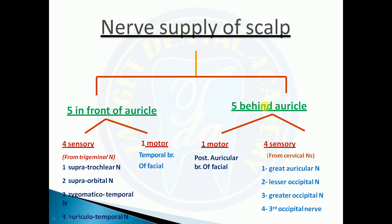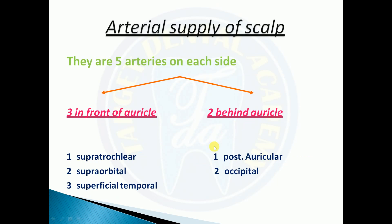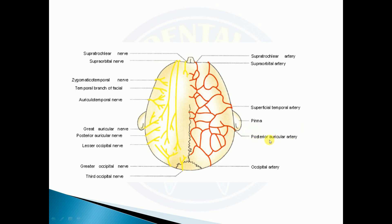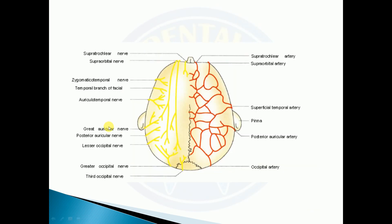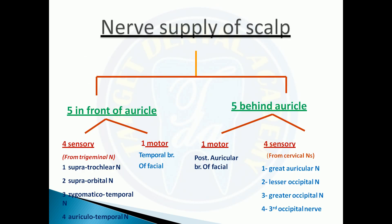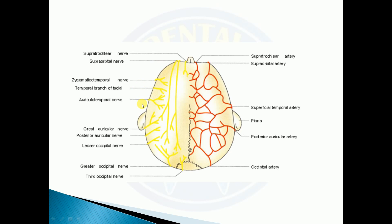Behind the auricle, one nerve is motor: the posterior auricular branch of the facial nerve. The four sensory nerves are the great auricular nerve, lesser occipital nerve, greater occipital nerve, and third occipital nerve.